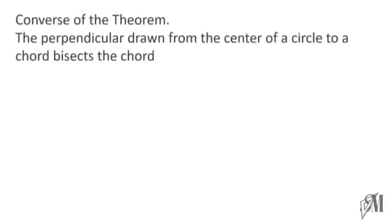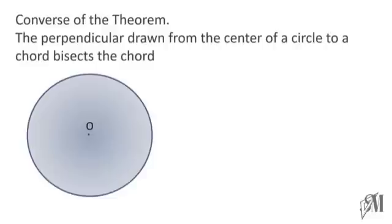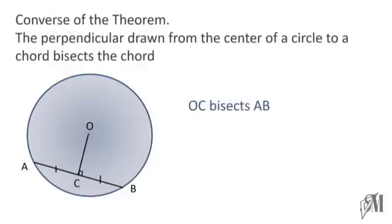Let's move on to the converse of this theorem. The converse of the theorem tells us that the perpendicular drawn from the center of a circle to a chord bisects the chord. Once again, O is the center, AB is a chord, and when I draw a line perpendicular to AB and mark the point of intersection as C, then AC is equal to CB. That is, the line OC is bisecting the chord AB, so OC bisects AB and AC is equal to BC.